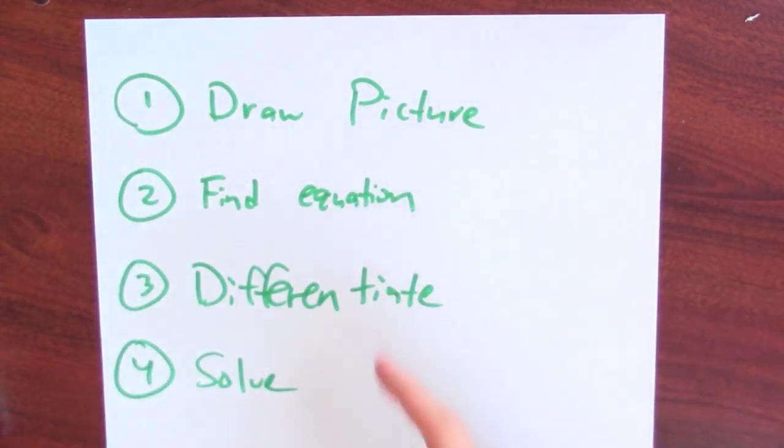And step four is to solve that equation for whatever you're interested in finding out. I mean, you're hopefully trying to find some rate of something, so you're going to try to find one of those derivatives in there.